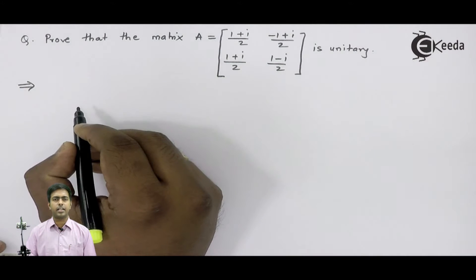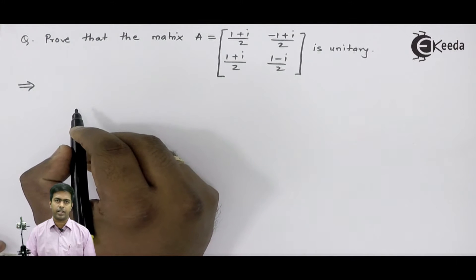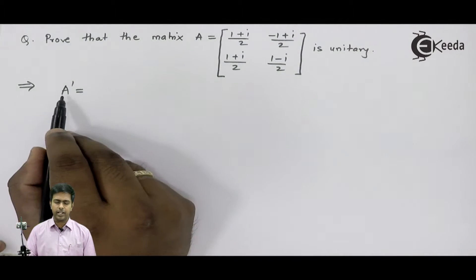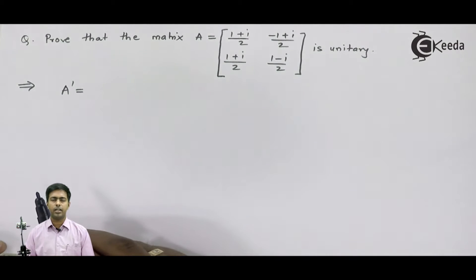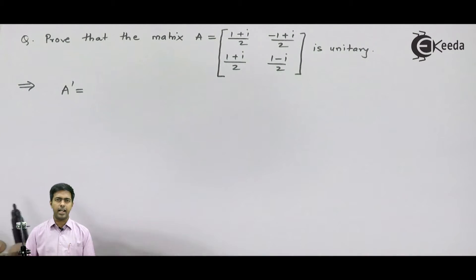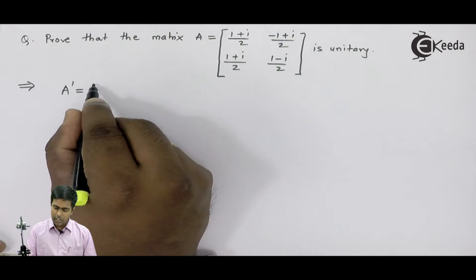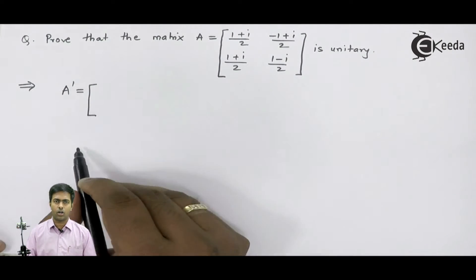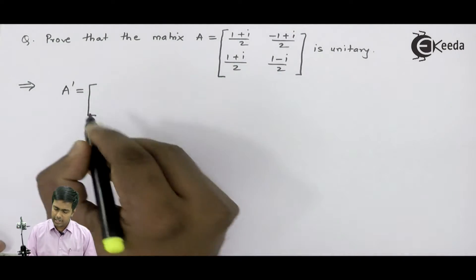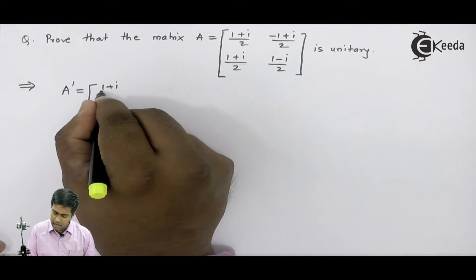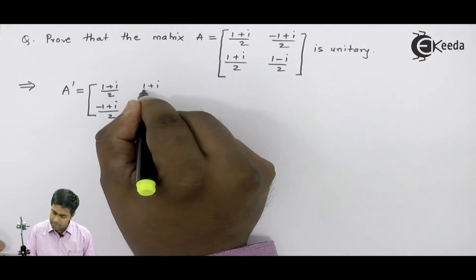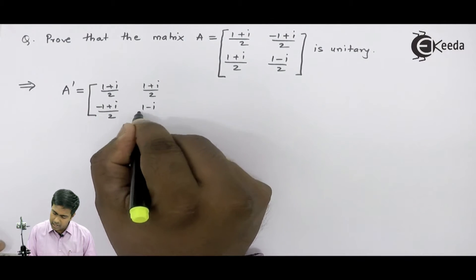To find A-theta, that is the transpose conjugate of the matrix, I will first find the transpose of the given matrix. The first row will become the first column and the second row will become the second column. So the transpose is equal to: (1+i)/2 and (-1+i)/2, then (1+i)/2 and (1-i)/2.